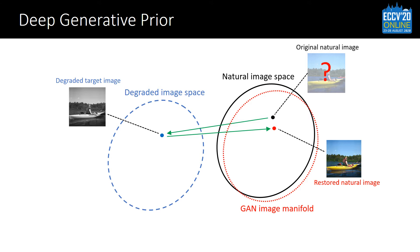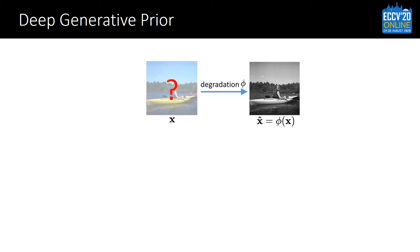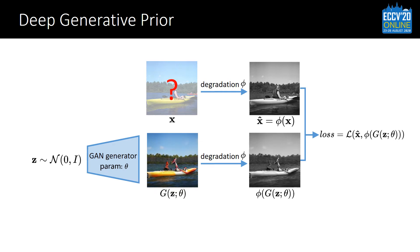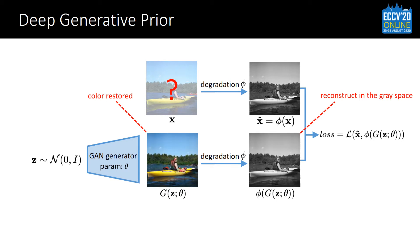Thanks to the image prior of GAN, the restored image would have a natural looking. We named this image prior as deep generative prior. Here we show the pipeline: given a degraded image obtained from some unknown natural image, we view the degraded image as a partial observation of the original natural image and reconstruct it in the observation space with the GAN. The image prior of the GAN would tend to restore the missing semantics like color to match natural images.